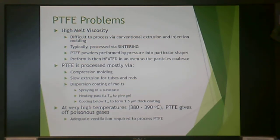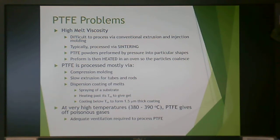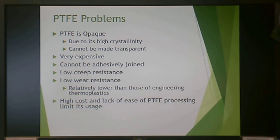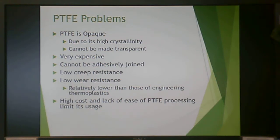At very high temperatures — well above the degradation temperature — Teflon gives off poisonous gases, including fluorine gas, which is worse than chlorine gas. Adequate venting is essential when processing Teflon in case that upper temperature is reached. Teflon is also opaque because of its high crystallinity, and cannot be made transparent unless using the specific AF grade. It is very expensive — a true specialty thermoplastic — and cannot be adhesively joined since no solvents affect it, ruling out solvent welding.